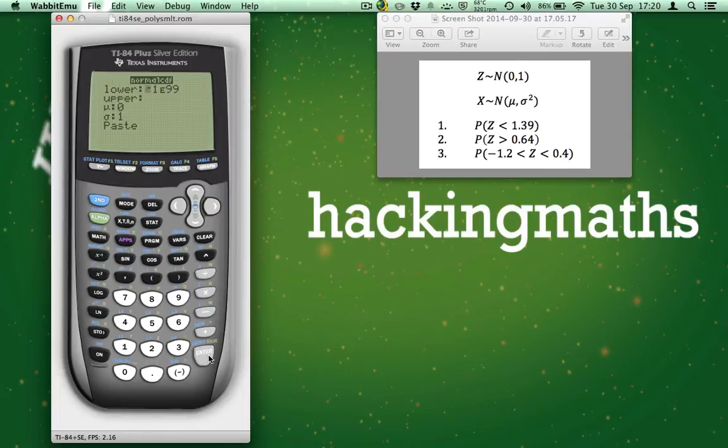Lower. This is the lower bound of the area. Upper. This is the upper bound of the area. Mu. This is the mean of the distribution, and for a standard normal distribution, that is 0. Sigma. This is the standard deviation of the distribution, and for a normal distribution, that is 1.